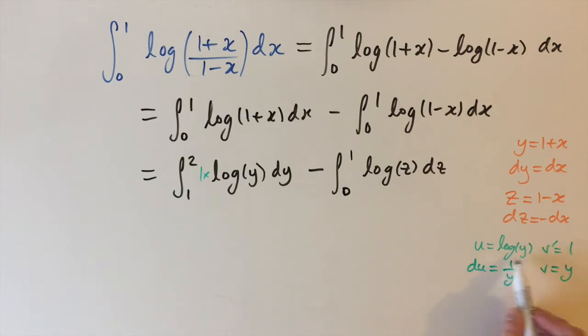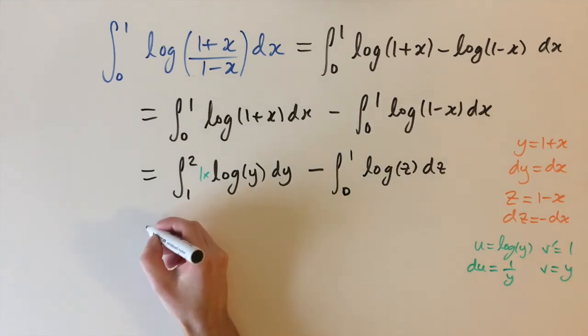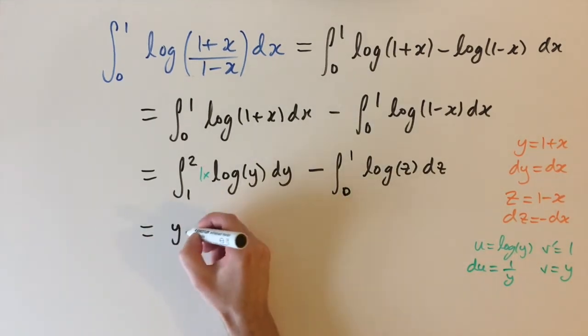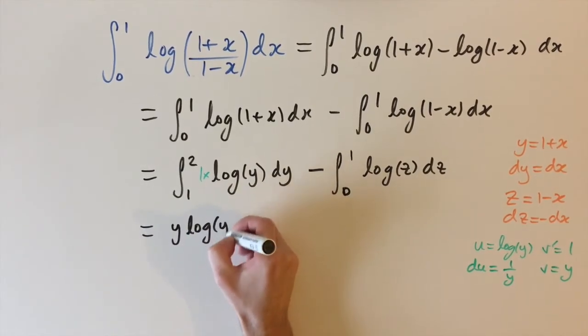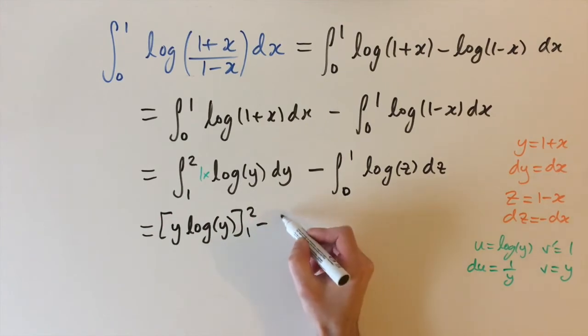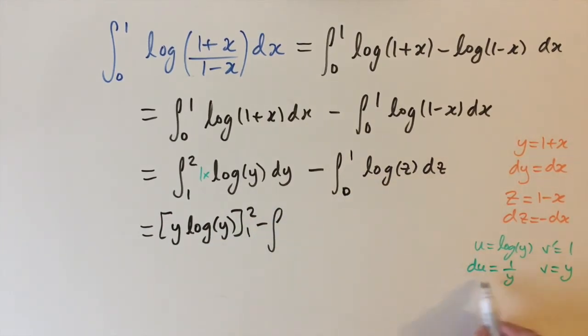So then we just plug this into the by parts formula if you remember we just have uv minus the integral of duv. So we have uv which is y times log of y, y log y between the limits 1 and 2.